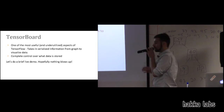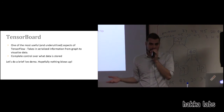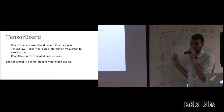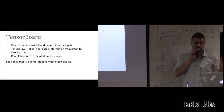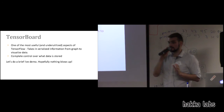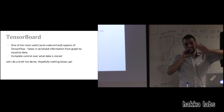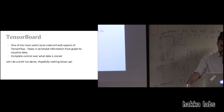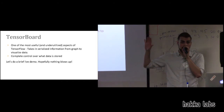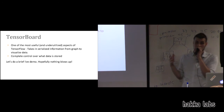I want to talk about TensorBoard quickly because it's very cool. TensorBoard allows you to visualize your models and statistics from your models. It can help you make sure that your models match what you've sketched out on paper. Let's do a brief live demo. I don't need to get into the crazy details about summary statistics, but I want to show you how easy it is to instantly visualize your graph.